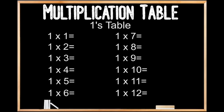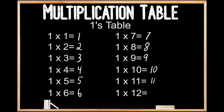1's table. 1 times 1 is 1. 1 times 2 is 2. 1 times 3 is 3. 1 times 4 is 4. 1 times 5 is 5. 1 times 6 is 6. 1 times 7 is 7. 1 times 8 is 8. 1 times 9 is 9. 1 times 10 is 10. 1 times 11 is 11. And 1 times 12 is 12.